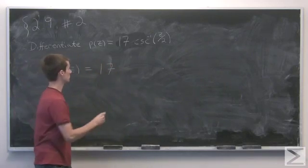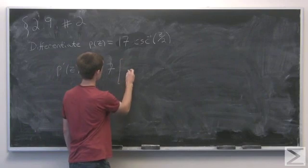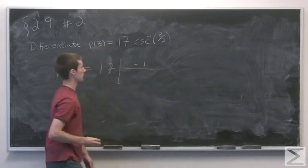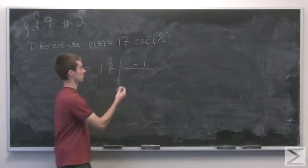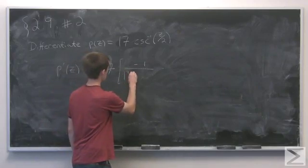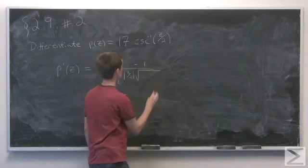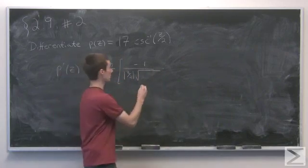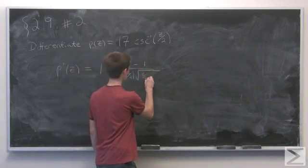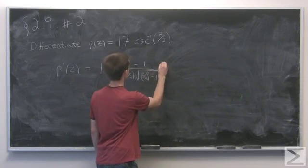And this is going to be times minus 1 over the absolute value of now z over 2 times square root of z over 2 squared minus 1.